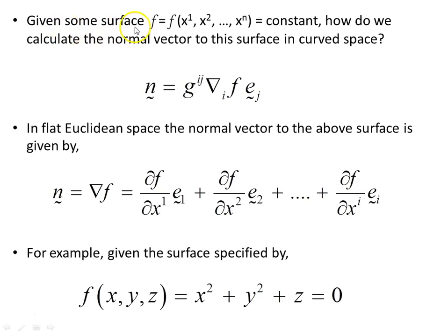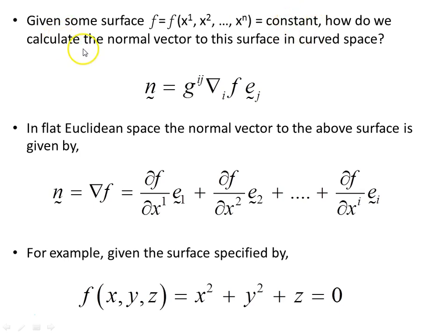Let's start with some given surface F as a function of the coordinates in that space — however many dimensions you have — and we'll set that equal to a constant. So some function is constant. How do we calculate the normal vector to the surface in curved space?